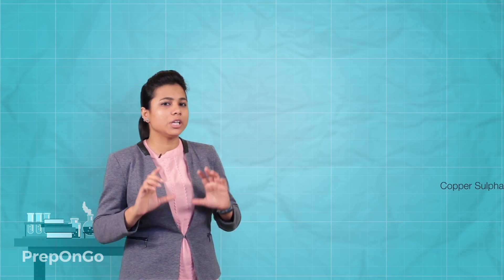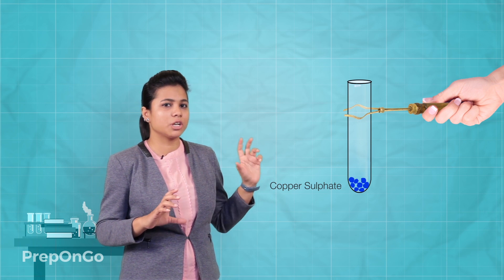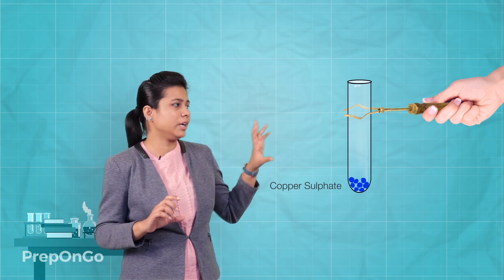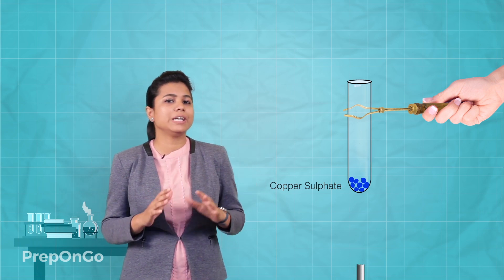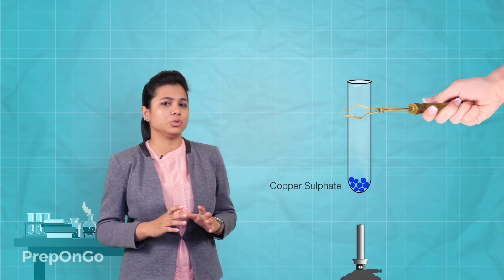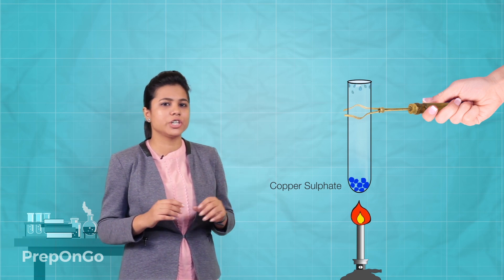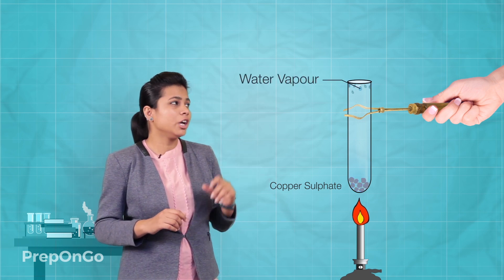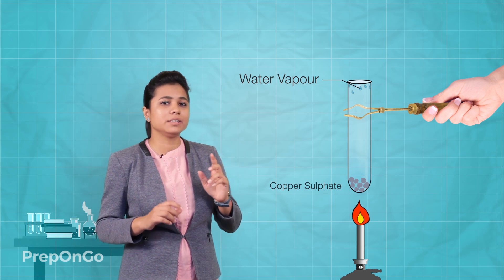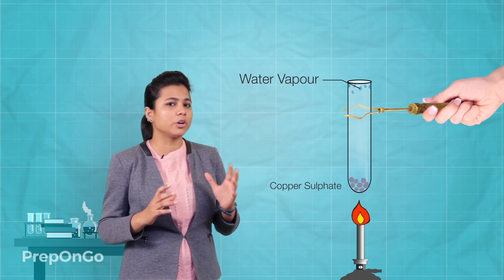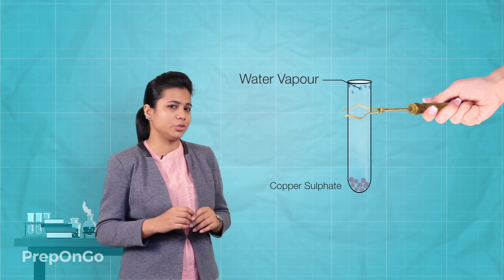Now we are going to perform an activity — perhaps the last activity of this chapter. We are going to take some copper sulphate crystals, which are blue in color, in a test tube. Now we are going to heat this test tube. You can see that the crystals have changed color to colorless, and there are some water vapors at the mouth of the test tube.